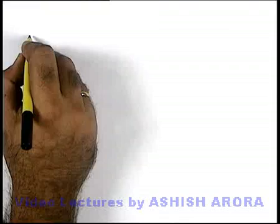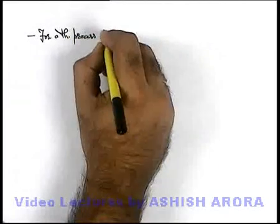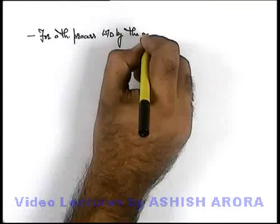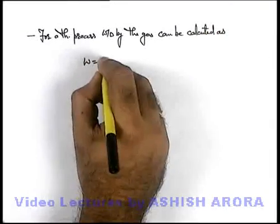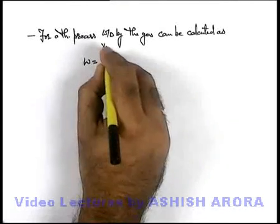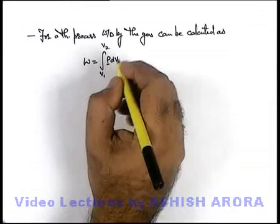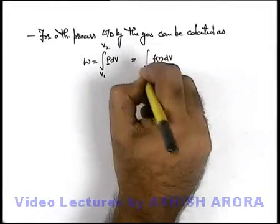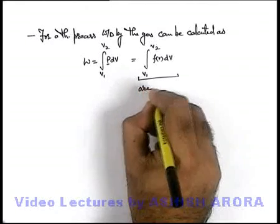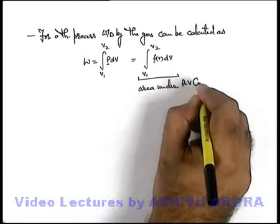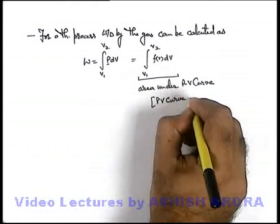Another important characteristic of an indicator diagram is that for a thermodynamic process, the work done by the gas can be calculated as the integration of p dv from v1 to v2. Since we have the process equation p = f(v), this becomes the integration of f(v) dv from v1 to v2. This expression represents the area under the p-v curve, i.e., the area between the p-v curve and the volume axis.